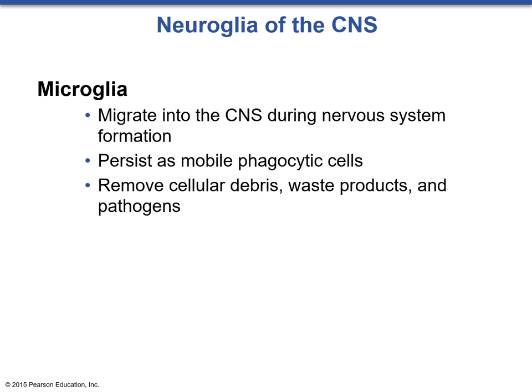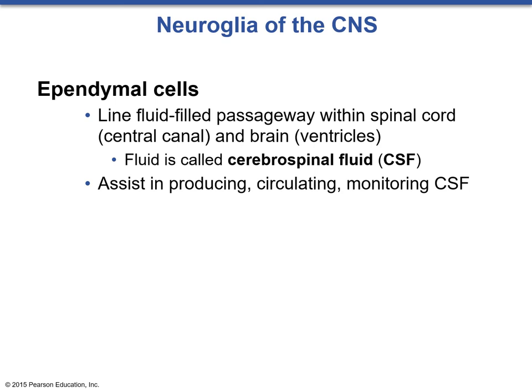The final type of glial cell in the CNS is the ependymal cell. These are cuboidal or columnar cells with cilia that line the ventricles and canals throughout the brain and spinal cord. Their function is to produce, circulate, and monitor cerebrospinal fluid, which allows for the transfer of nutrients, removal of waste, and maintenance of the brain environment.